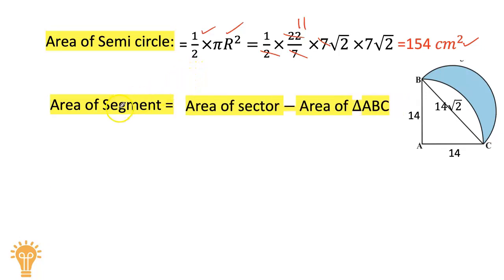Now we have to find the area of the segment. Area of segment is area of sector minus area of triangle ABC. From the area of the quadrant, that is the sector, minus the area of triangle ABC. The formula is θ/360 × πr² minus ½ × base × height.